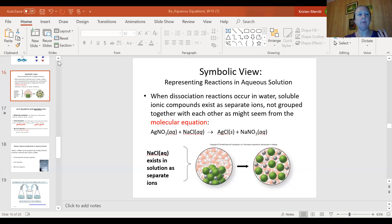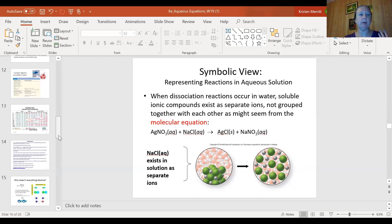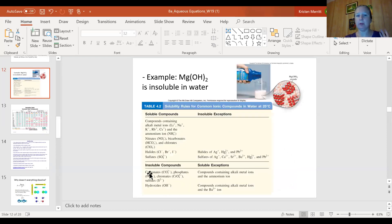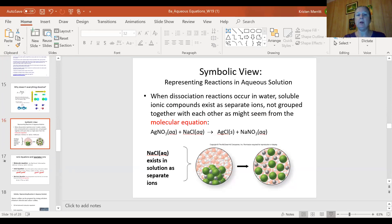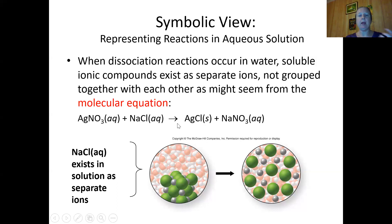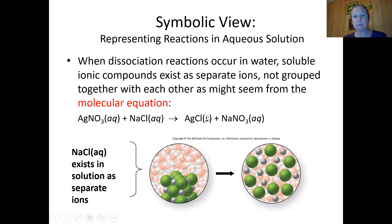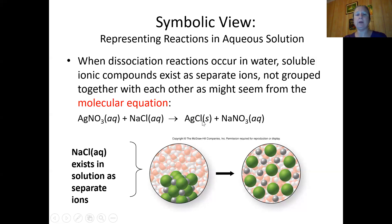Going back to Part 1, we talked about solubility. Some compounds are not soluble in water — they will not dissolve. This can happen if you mix two solutions together, which means two dissolved solutions. When you mix them, they rearrange, and you actually get a precipitate — that means it falls out of solution. A solid forms, or sometimes a gas. You pour two liquid solutions together and you get this cloud or powder. That's your reaction — a chemical reaction.